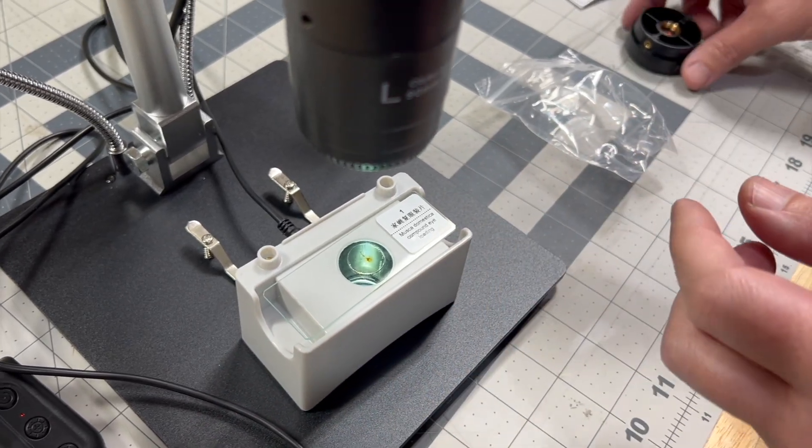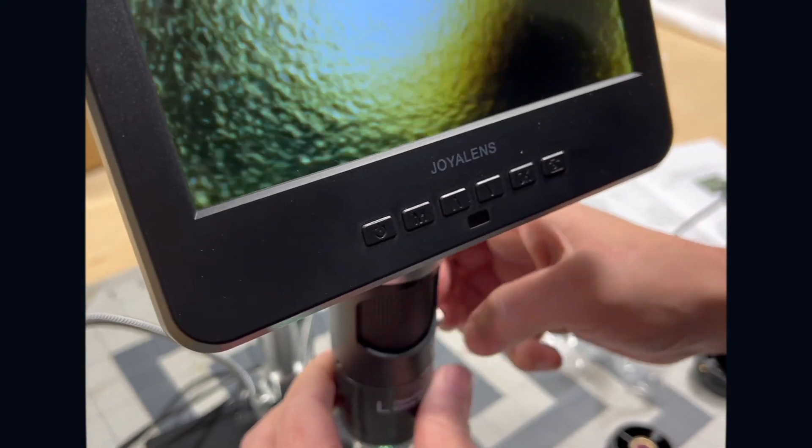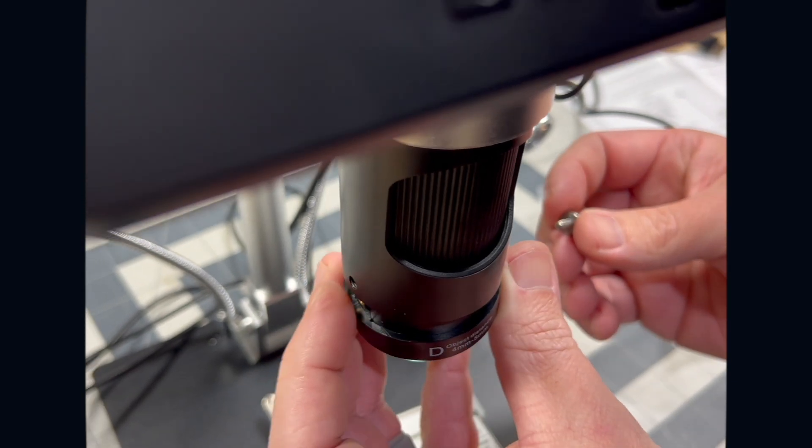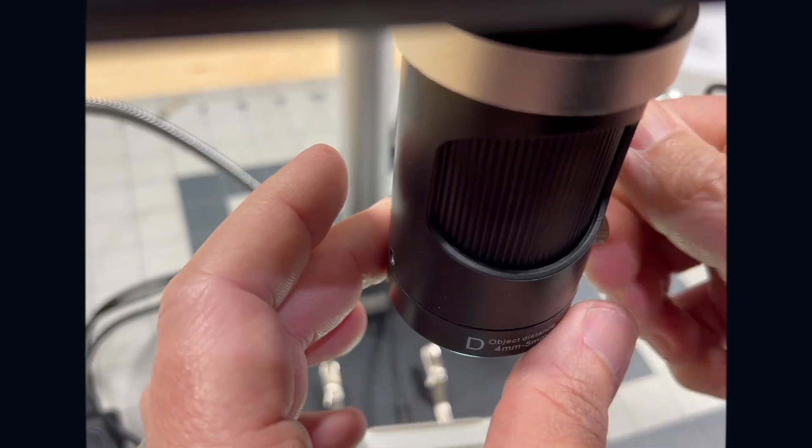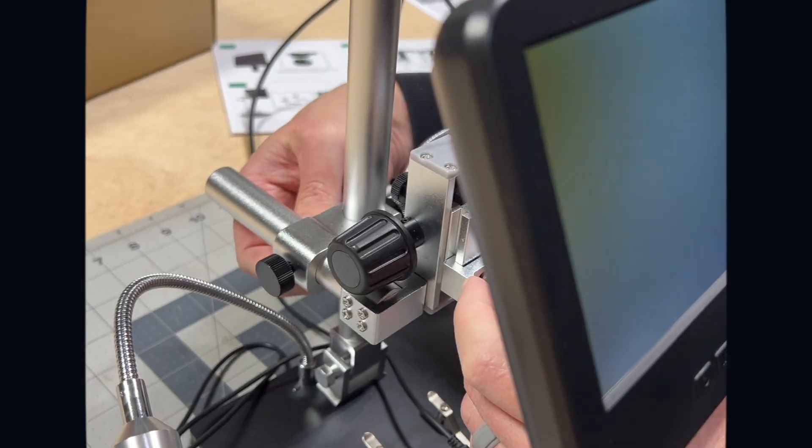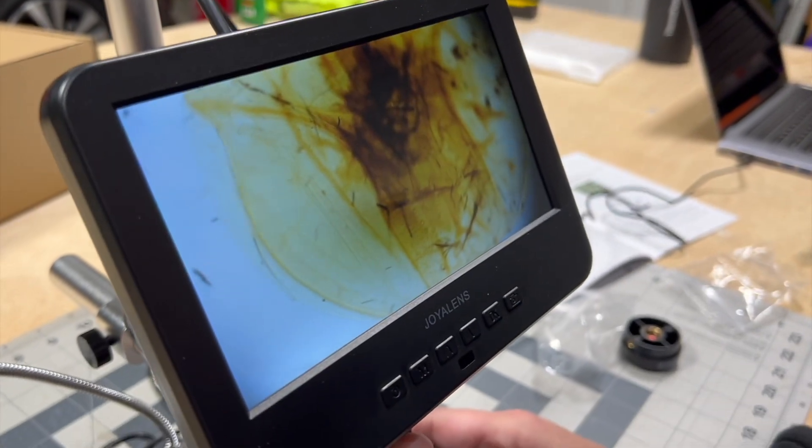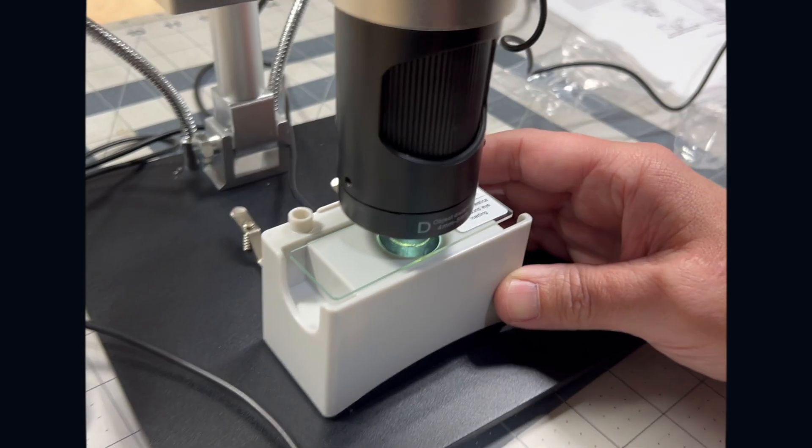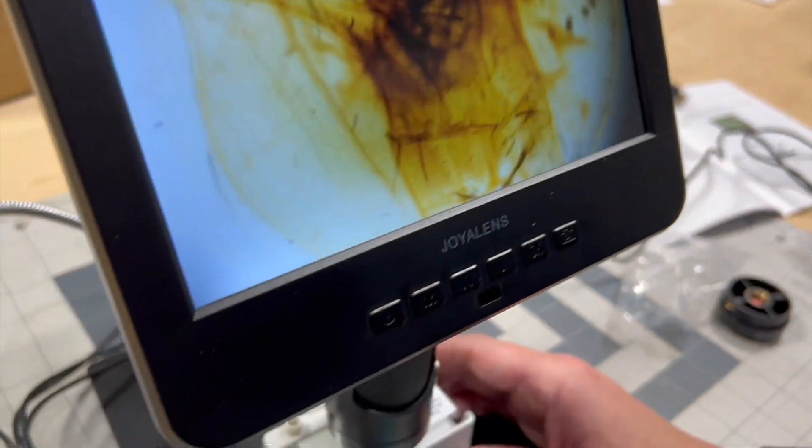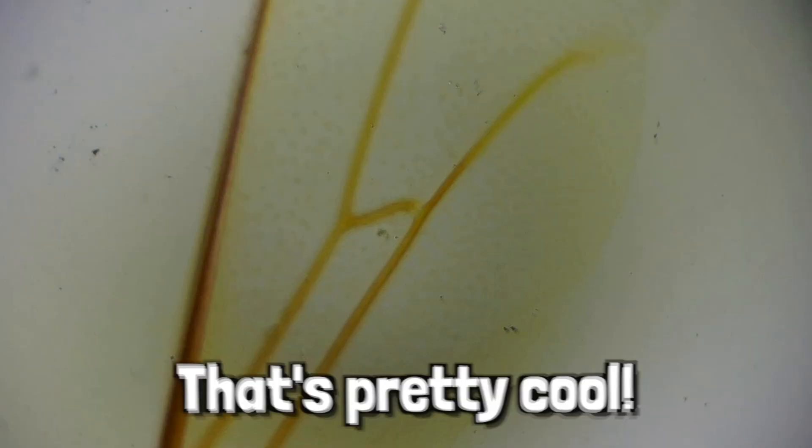And we need to change to our even closer up lens, our D lens. Oh wow, that is really in there. That certainly is magnified. I don't know what that is but here's a honey bee wing. That's pretty cool.